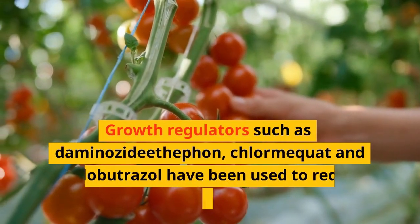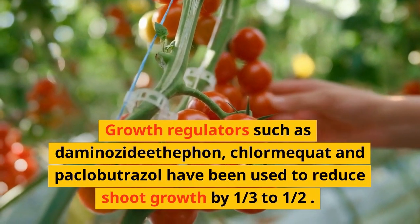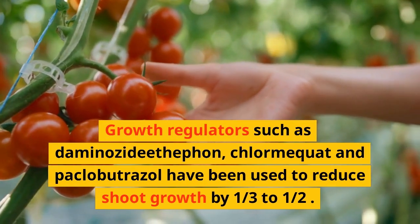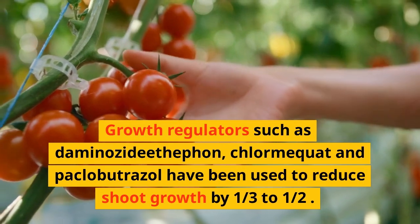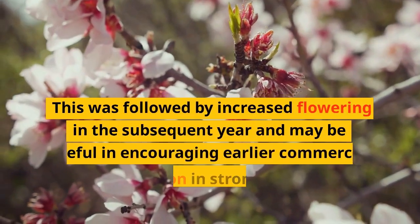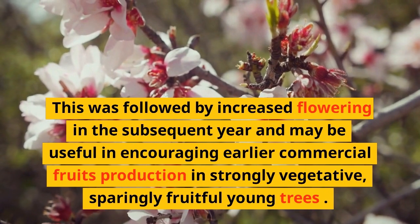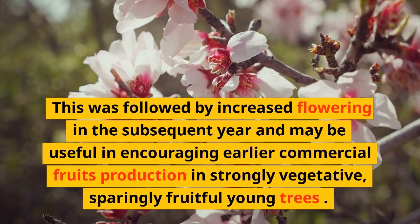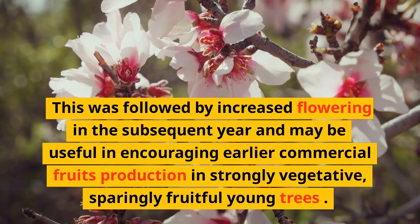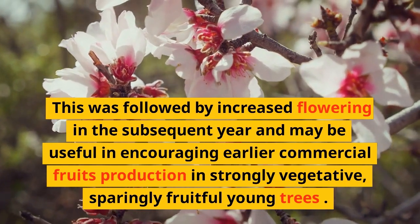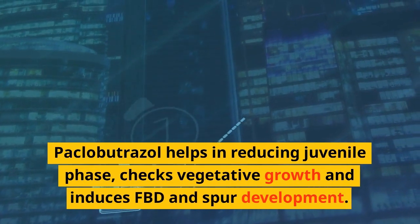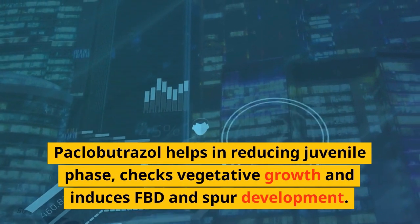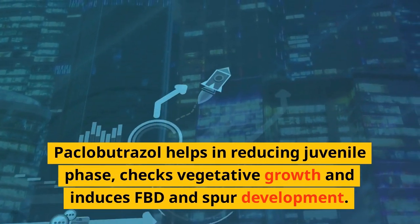Growth regulators such as daminozide, chlormequat, and paclobutrazole have been used to reduce shoot growth by one-third to one-half. This was followed by increased flowering in the subsequent year and may be useful in encouraging earlier commercial fruit production in strongly vegetative, sparingly fruitful young trees. Paclobutrazole helps in reducing the juvenile phase, checks vegetative growth, and induces flower bud differentiation and spur development.